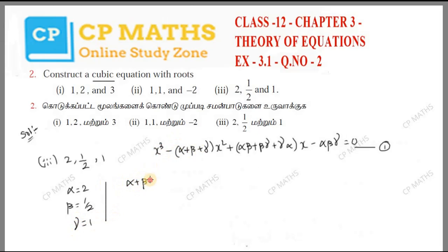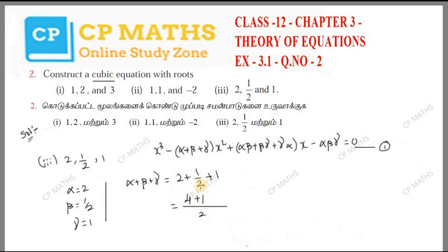We find alpha plus beta plus gamma: 2 plus 1/2 plus 1. Taking LCM, this equals 7/2. So the sum of roots is 7/2.